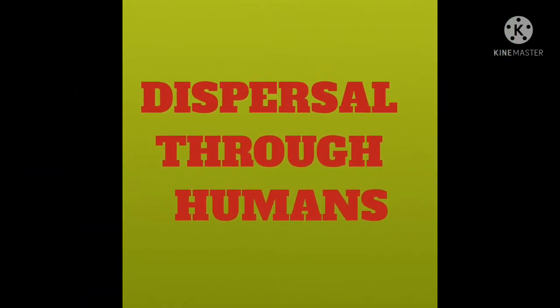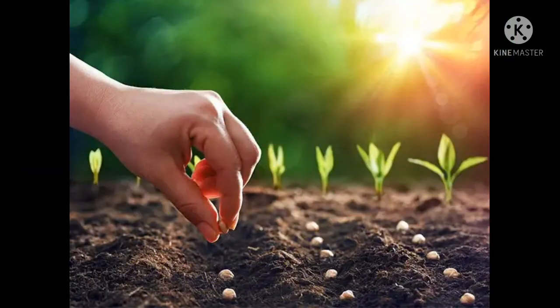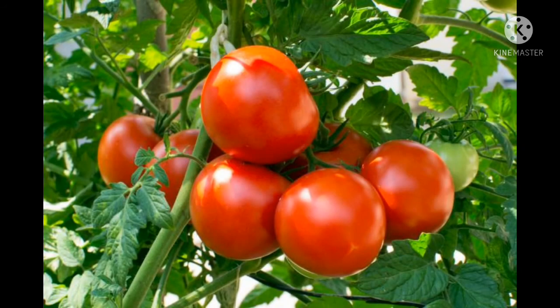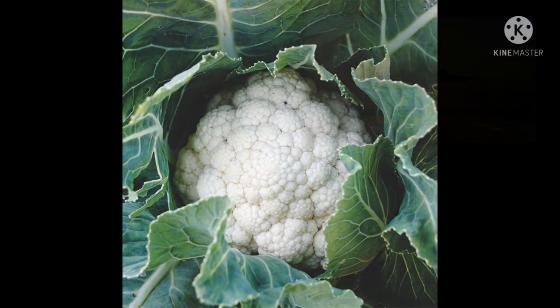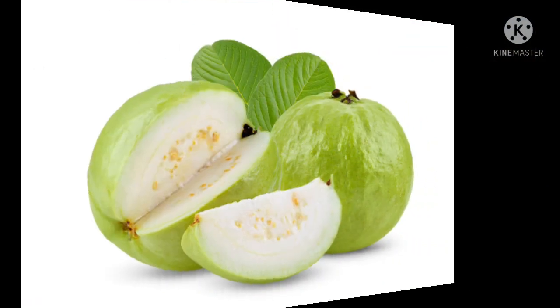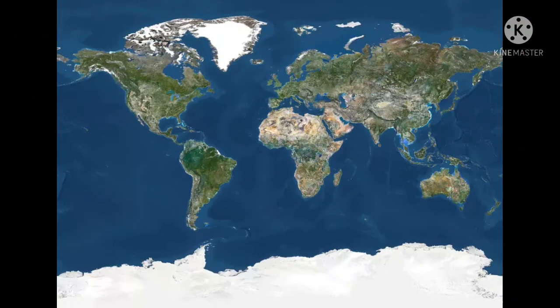Dispersal of seeds through human beings. Generally, we sow seeds of flowers, fruits, and vegetables in our home gardens. Everyone is aware of tomatoes — it is a common vegetable used in cooking in every home. But do you know where it originally came from? It is not native to India. When European travelers came to trade in India, they left some seeds of vegetables like tomato, cauliflower, and others. Similarly, different kinds of seeds of fruits and vegetables around us are imported and exported, getting dispersed all over the world.